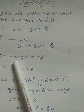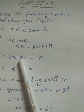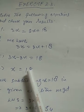3x minus 2x is equal to 18, so x equals 18.